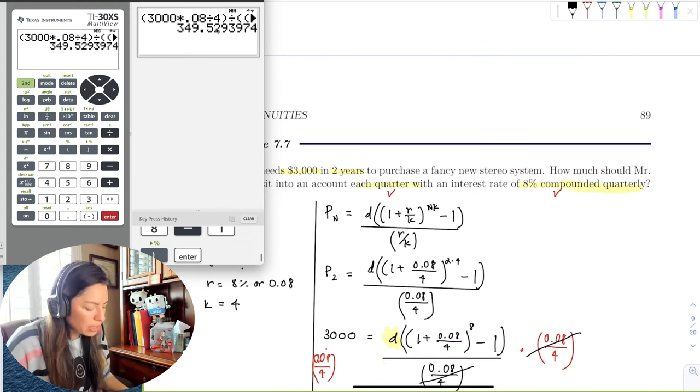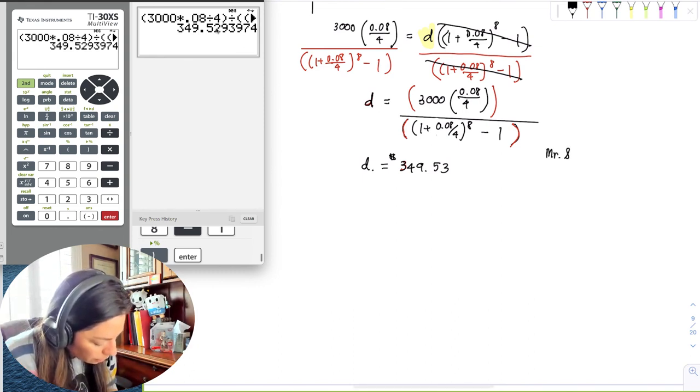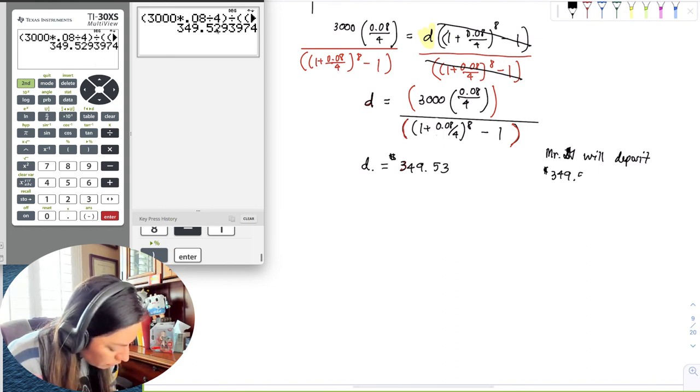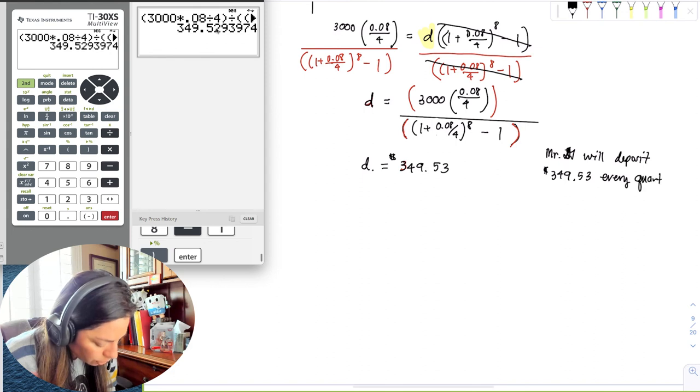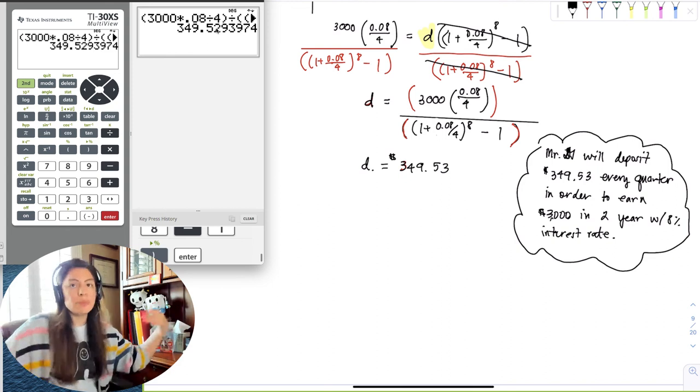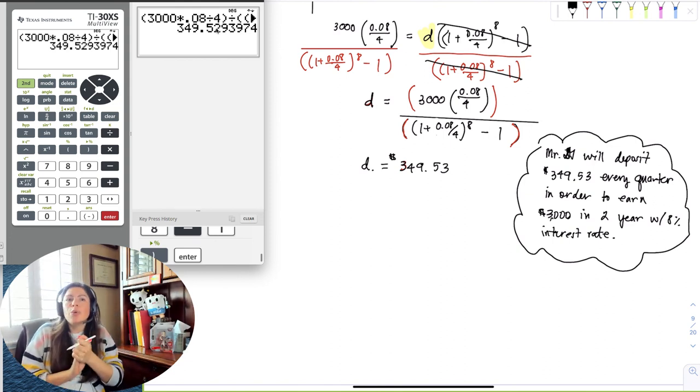And then once you do, you don't get any errors. So we get 349, and then of course every penny counts, so we'll round to the nearest cent. So 9 is higher than 5, so we're going to make this 53 cents. Okay, so the real question was how much should he deposit into each quarter to get $3,000 in 2 years? So Mr. DJ will deposit $349.53 every quarter in order to earn $3,000 in two years with 8% interest. That's the idea.